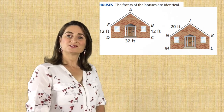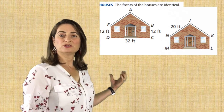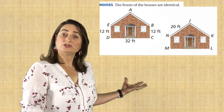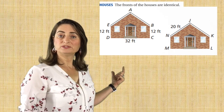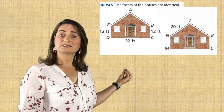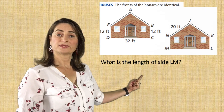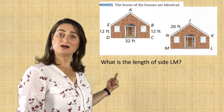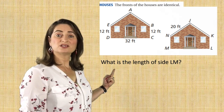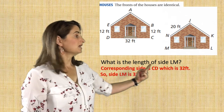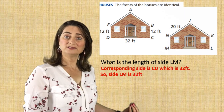Now let's look at this example and answer the questions. The fronts of the houses are identical — and the word identical means congruent. So they already told you they are congruent, which means all the side lengths and all the angles are congruent. What is the length of side LM? The corresponding side from the other house is CD, and CD is 32 feet. Therefore, side LM is 32 feet also, because they are identical or congruent.